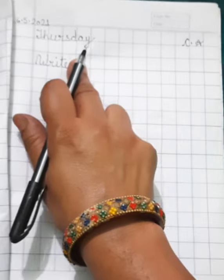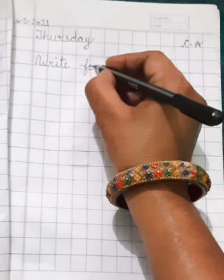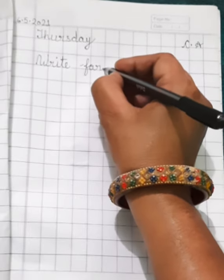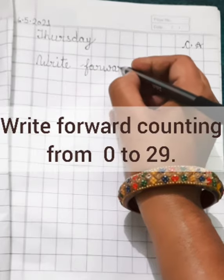You will write here W-R-I-T-E, write. You will take one finger gap. Then you will write here F-O-R-W-A-R-D, forward.